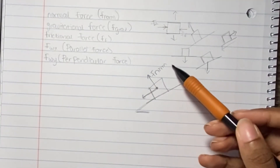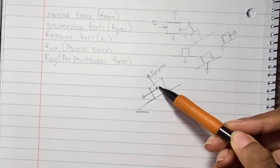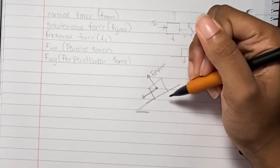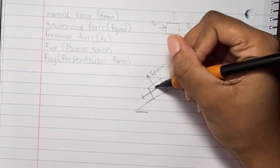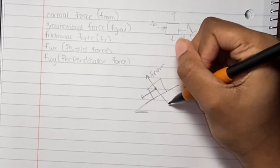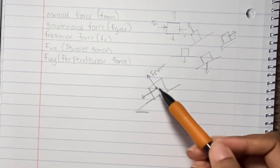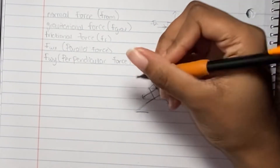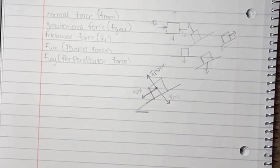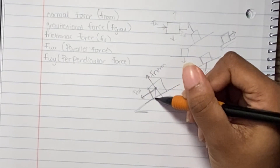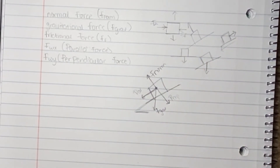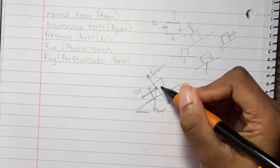The other force is the perpendicular force, which is equal and opposite to your normal force. Since the normal force is perpendicular to the surface, the perpendicular force also runs perpendicular to the surface but in the opposite direction. So from the center of the box you have the perpendicular force going into the surface, and don't forget that gravity goes straight down — that's your force of gravity.